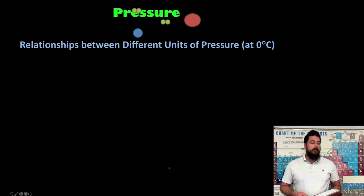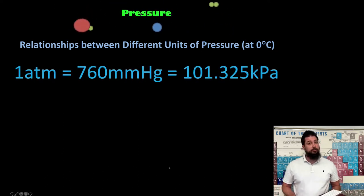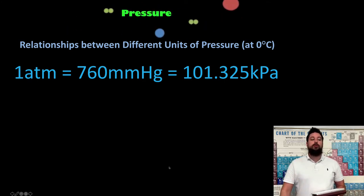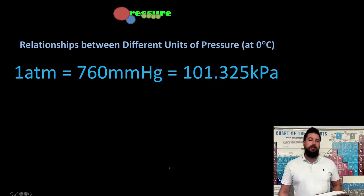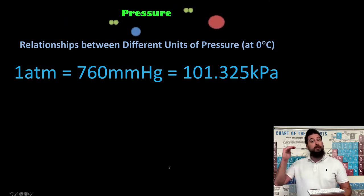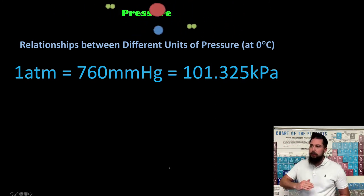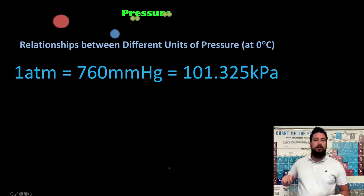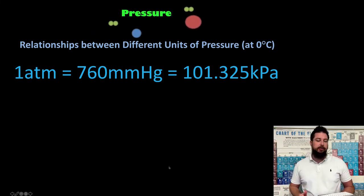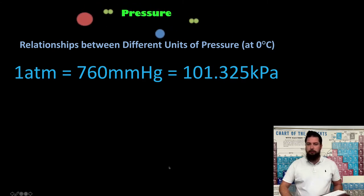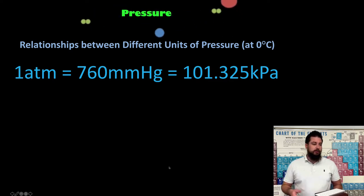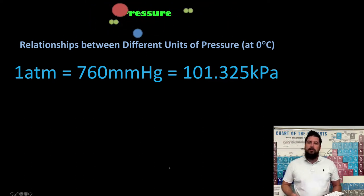There is a conversion factor between those units: one atmosphere of pressure equals 760 millimeters of mercury, which equals 101.325 kilopascals. At sea level we experience one atmosphere of pressure because there's one atmosphere above us. As we go up — say hiking a peak in Colorado — we have less atmosphere above us, so the pressure is less. It's like diving deep in a pool where you feel pressure in your ears.